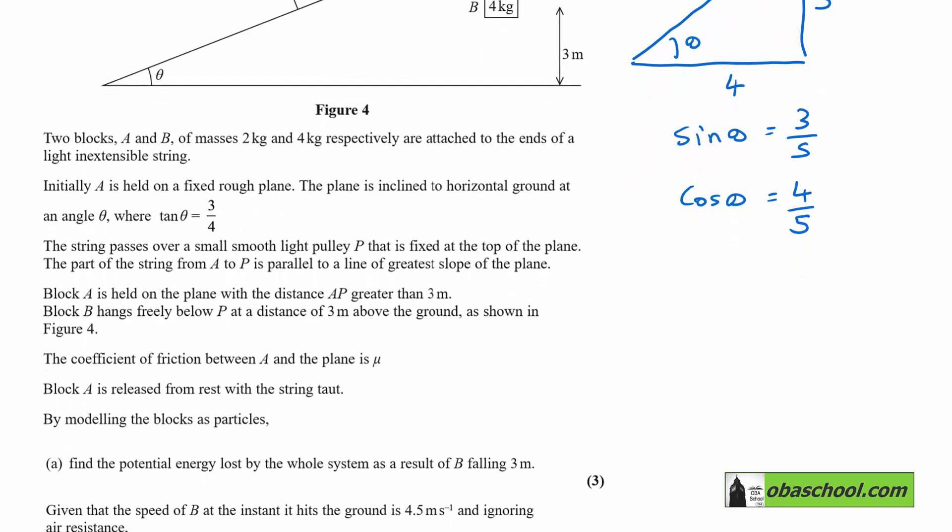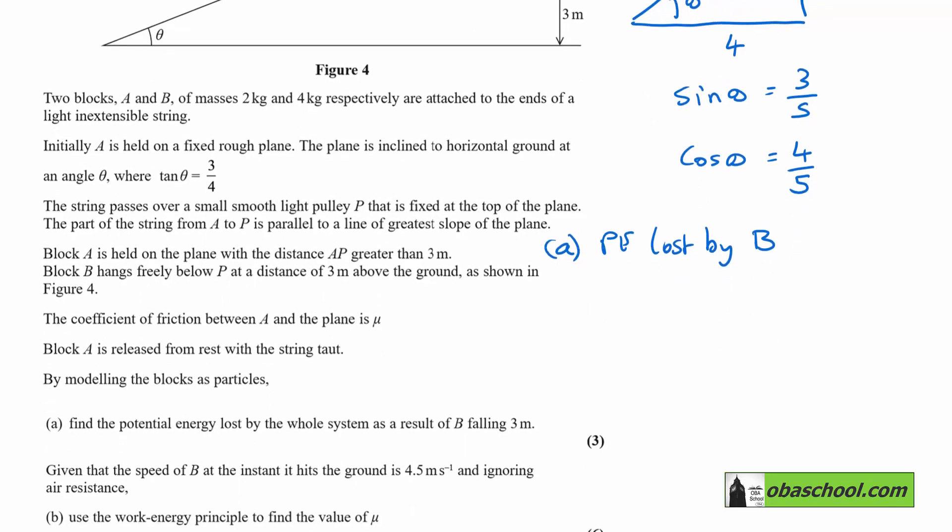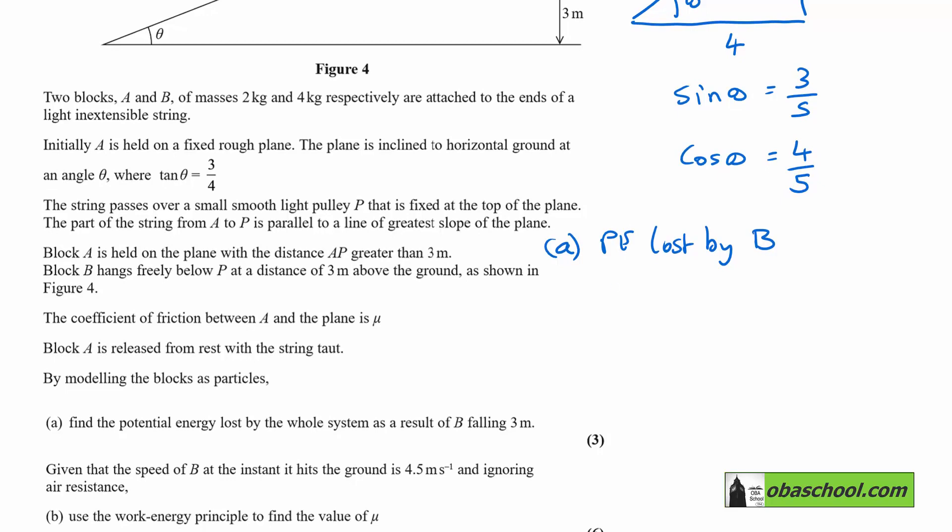By modelling the blocks as particles, find the potential energy lost by the whole system as a result of B falling 3 meters. We can think about the potential energy lost by B when it falls from its starting position down to the ground. That is going to be, it's got a mass of 4, M times G times H, and calculate that, and that is 117.6 joules.